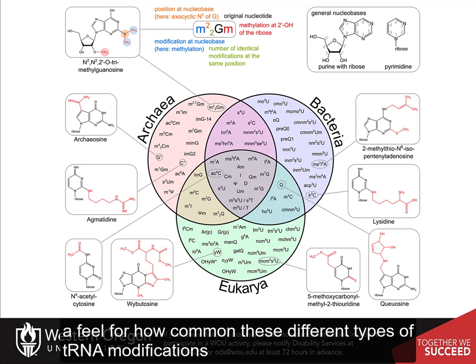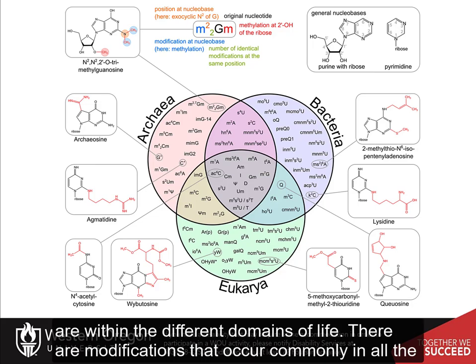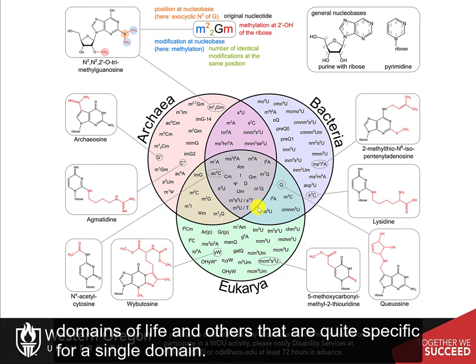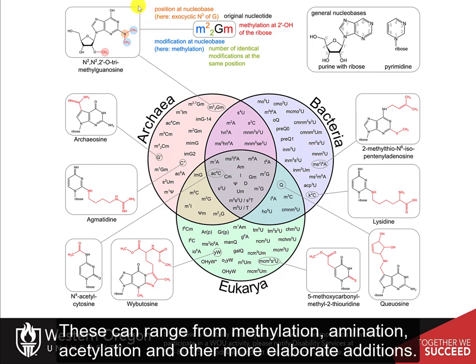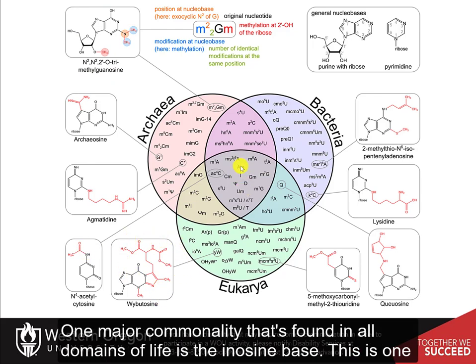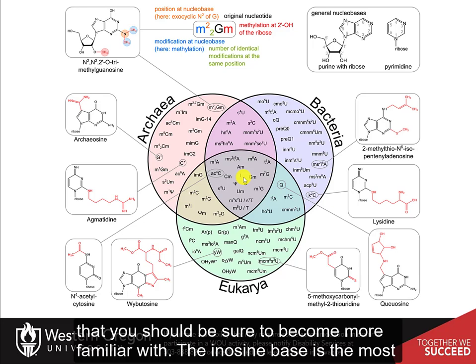Here you can get a feel for how common these different types of transfer RNA modifications are within the different domains of life. There are modifications that occur commonly in all domains of life and others that are quite specific for a single domain. These can range from methylation, amination, acetylation, and other more elaborate additions. One major commonality found in all domains of life is the inosine base, which is one you should be sure to become more familiar with.